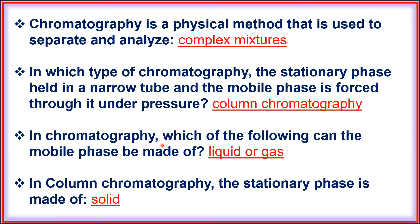In chromatography, which of the following can the mobile phase be made up of — that is liquid or gas. In column chromatography, the stationary phase is made up of solid.